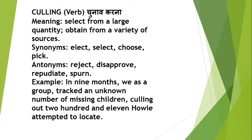In 9 months, we as a group tracked an unknown number of missing children, culling out 211 that we attempted to locate. In this way, we have to track unknown missing children — selecting from a large quantity. This means culling.